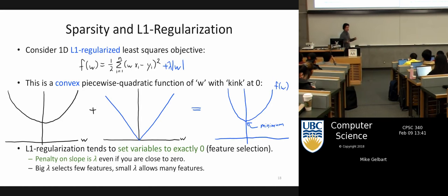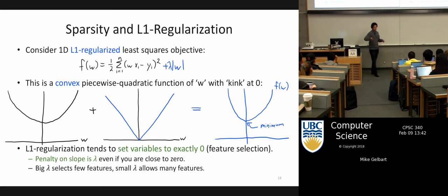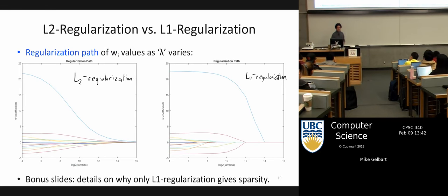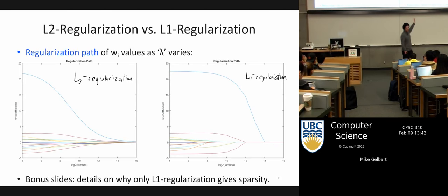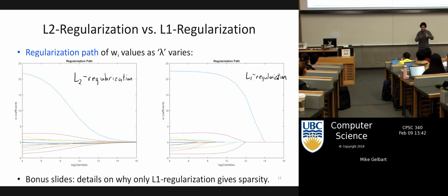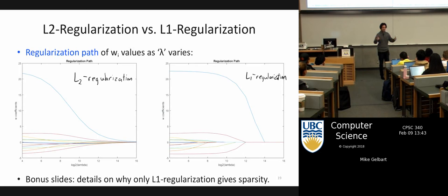Lambda controls the strength of regularization just like before — picking lambda really big will throw away more features than picking lambda small. It's a nice slider for how strong you want feature selection to be. Looking at the regularization path for L1 — lambda on the x-axis, all weights shown — you can see some weights snapping to zero at a certain point and staying there, instead of all weights asymptotically approaching zero as with L2.